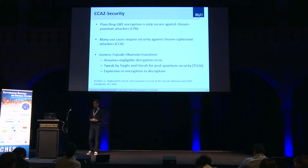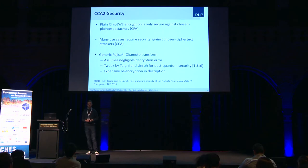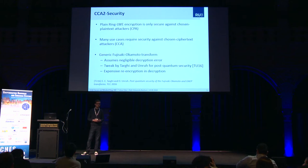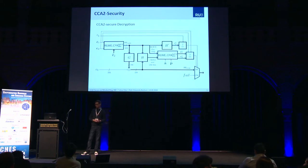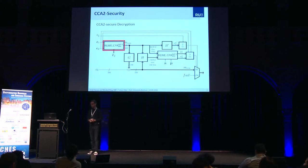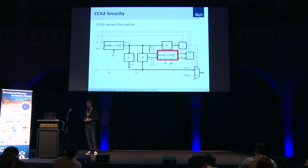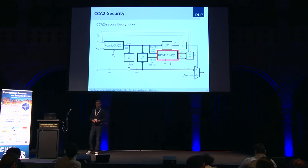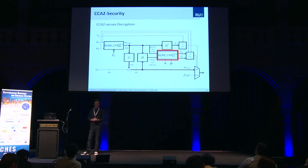There's also a tweak by Targhi and Unruh to achieve post-quantum security for the Fujisaki-Okamoto transform. One challenge with the transform is that it requires an expensive re-encryption during decryption. In the CCA decryption we have both the CPA decryption and the CPA re-encryption. This is especially crucial for Ring LWE-based schemes because the encryption is always much more expensive than the decryption. So a CCA2 secure scheme has quite some overhead compared to a CPA secure scheme.